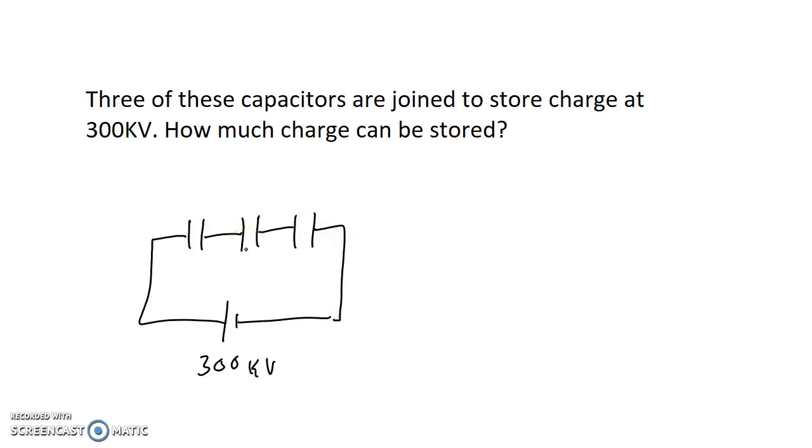If we think about this in terms of Kirchhoff's voltage law, we can see that if we go around the circuit, the 300 kilovolts being supplied by the source has to be distributed into all three capacitors. And since the three capacitors are identical, they're going to take equal voltages of 100 kilovolts each, which means that none of the three capacitors are going to be exposed to a voltage higher than what they're able to handle.